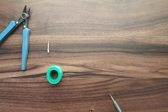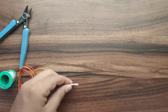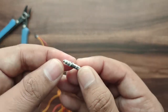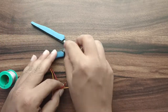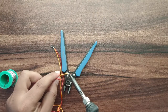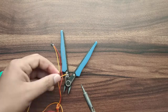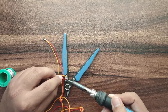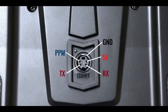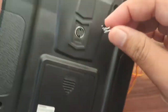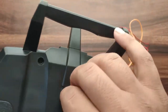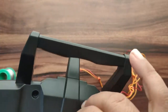Now let's do the connection. The transmitter connector pins are PPM, TX, RX, 5V, and ground. Out of those we will be using PPM and ground. Insert the connector so that one pin goes into PPM and the other pin touches ground. Make sure that the ground connection is on the second pin.